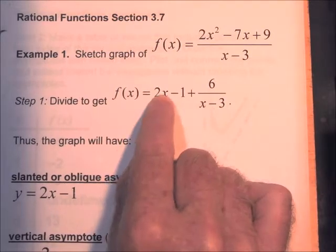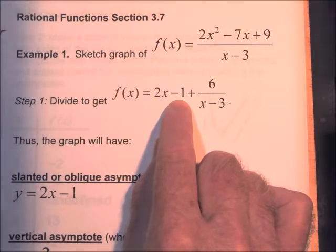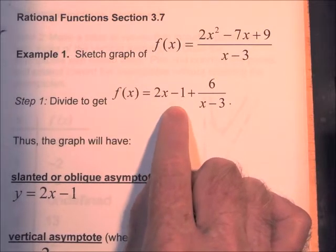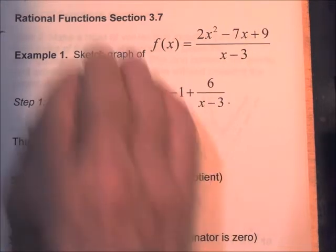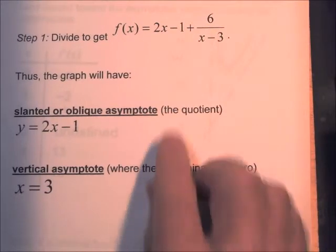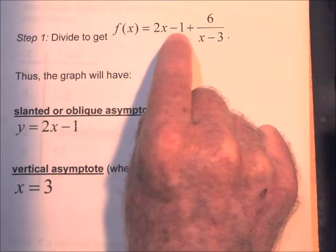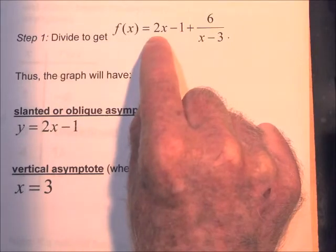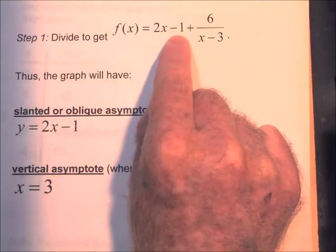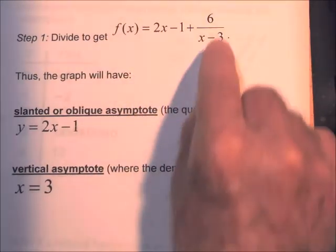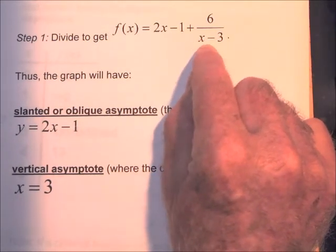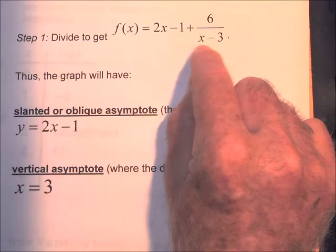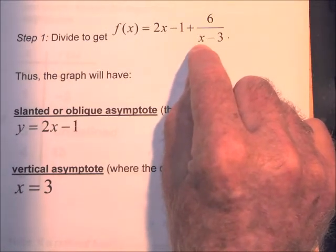We actually did this long division example previously, and this was the result we got. This tells us there are going to be two asymptotes. We have a slanted asymptote — the quotient gives us the slanted asymptote, which is y equal to 2x minus 1. Also, the denominator gives us a vertical asymptote when it equals 0, which is x equal to 3.